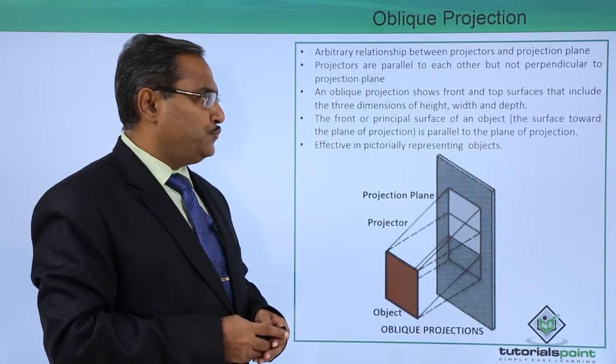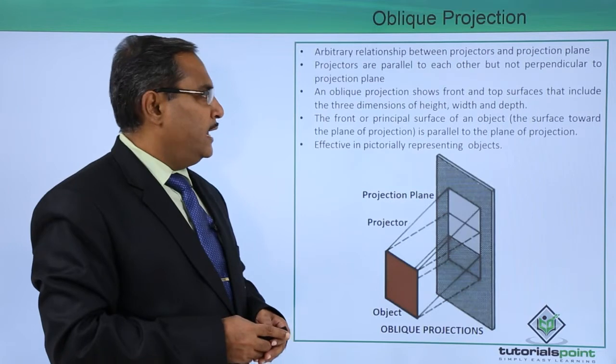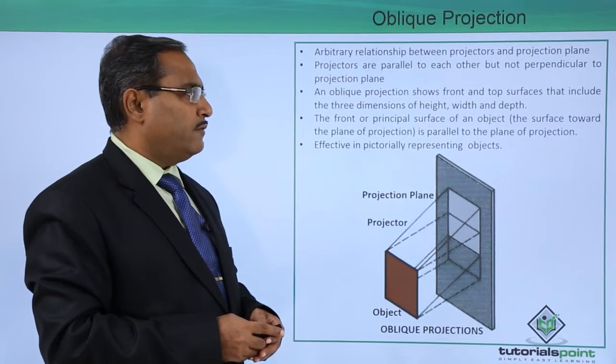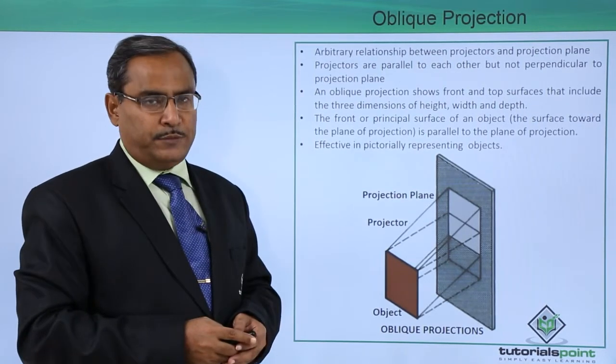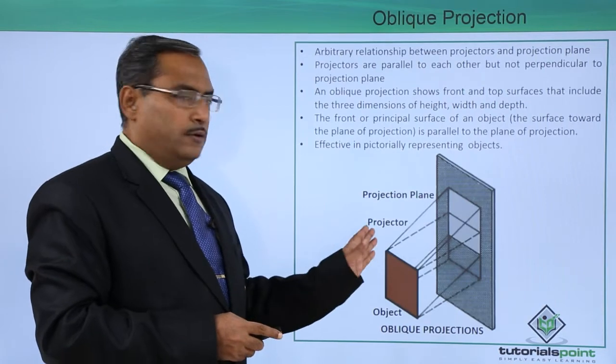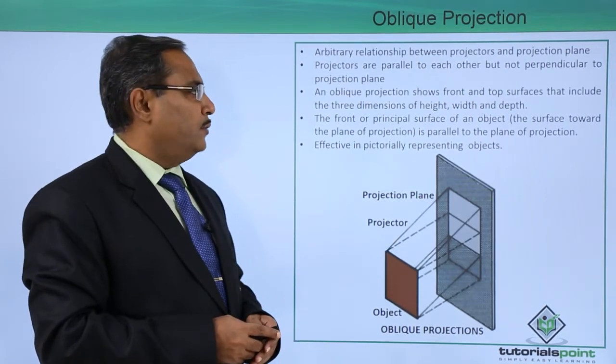An oblique projection shows front and top surfaces that include the three dimensions of height, width and depth. It can show the front and the top surfaces of the object.